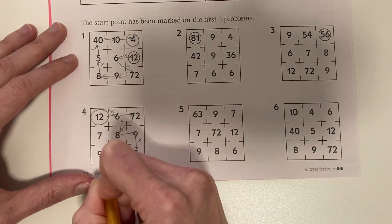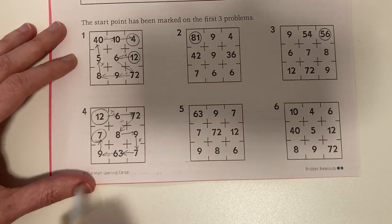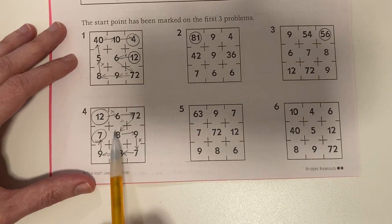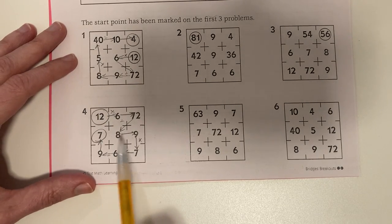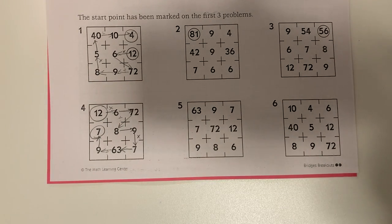And then we can do this. 63 divided by 9 is 7. You can start there. You can also start at the 9 and work your way backwards. There's more than one way to do it.